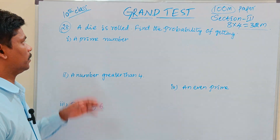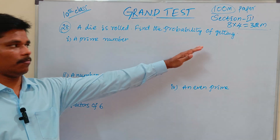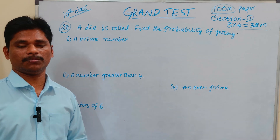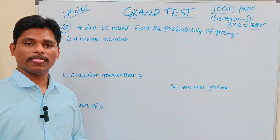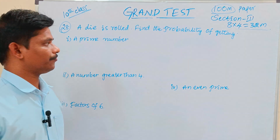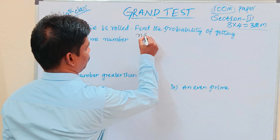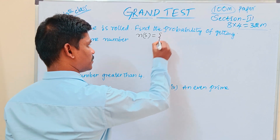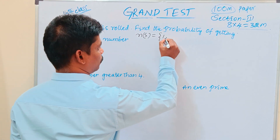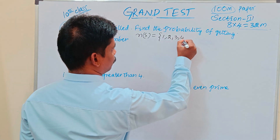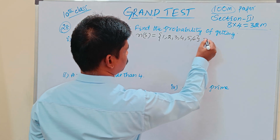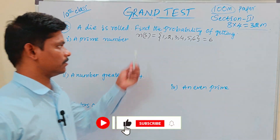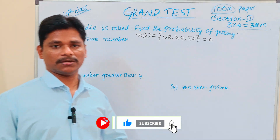This is the question. A die is rolled. Find the probability of getting one. So the number of possible outcomes — take the sample space. N of S: 1, 2, 3, 4, 5, 6 — total 6. So N of S, that is sample space, is the total number of outcomes.